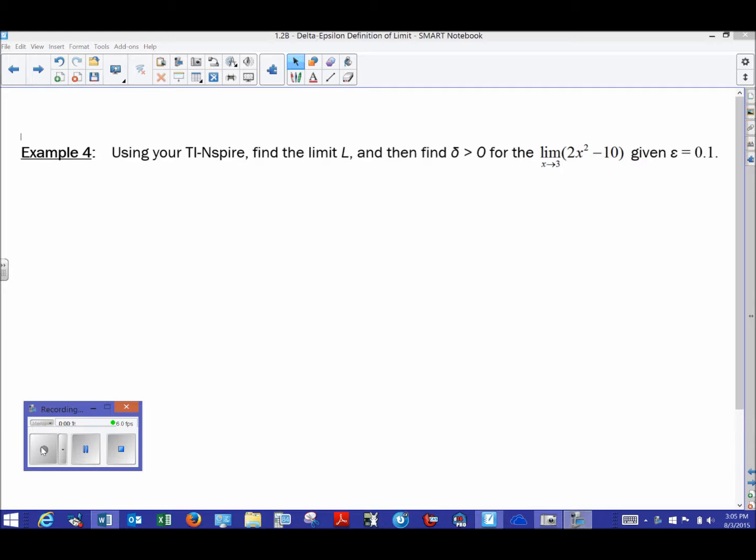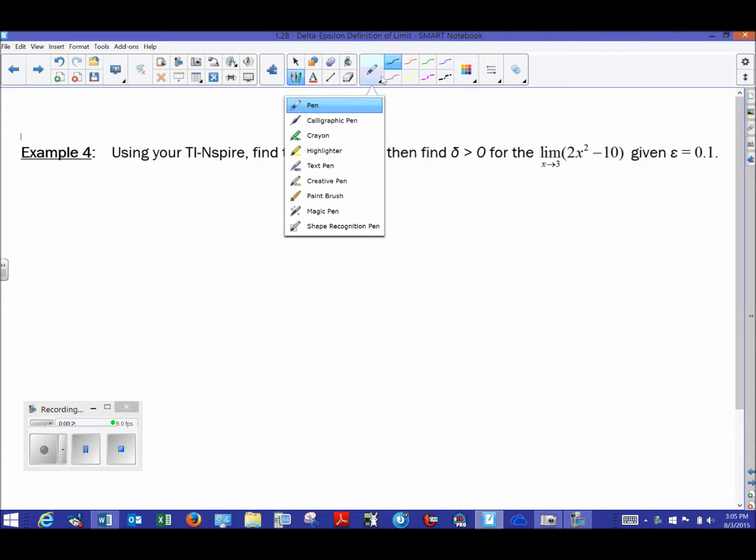We're now concerning ourselves with focusing on a not-so-pretty type of function, one here that you can obviously see is not linear but quadratic instead, that we are still very interested in applying the definition of limit to find the delta value that gives us this particular range of tolerance for our y values or our epsilon.